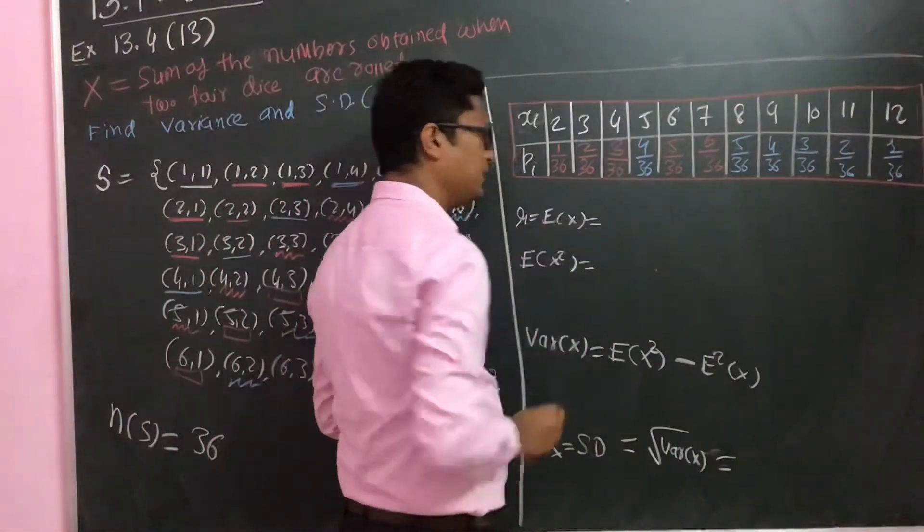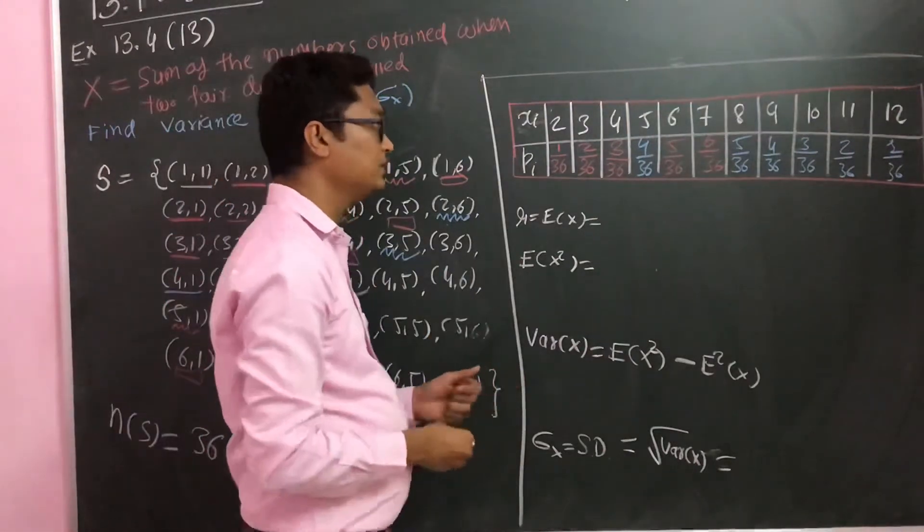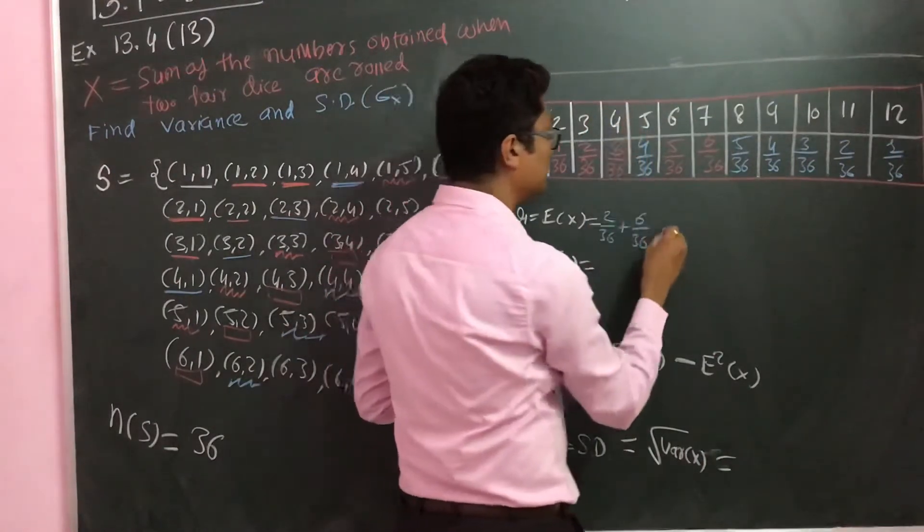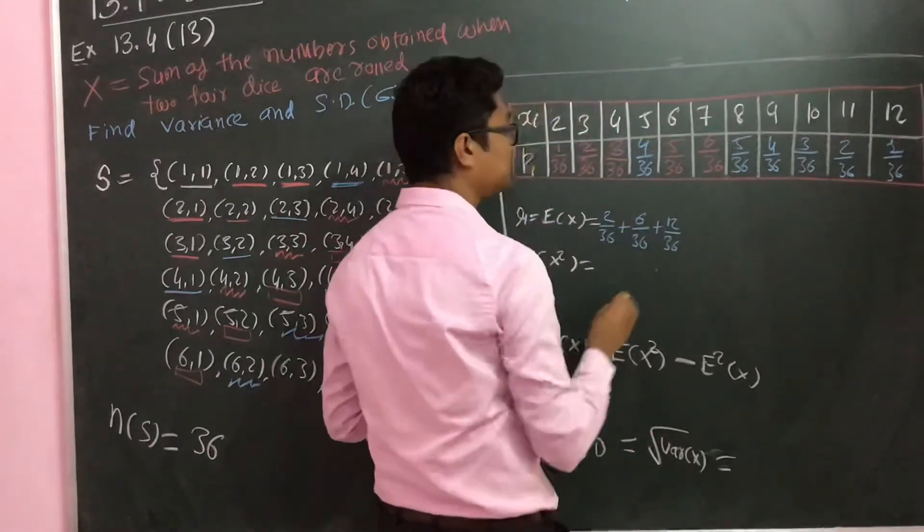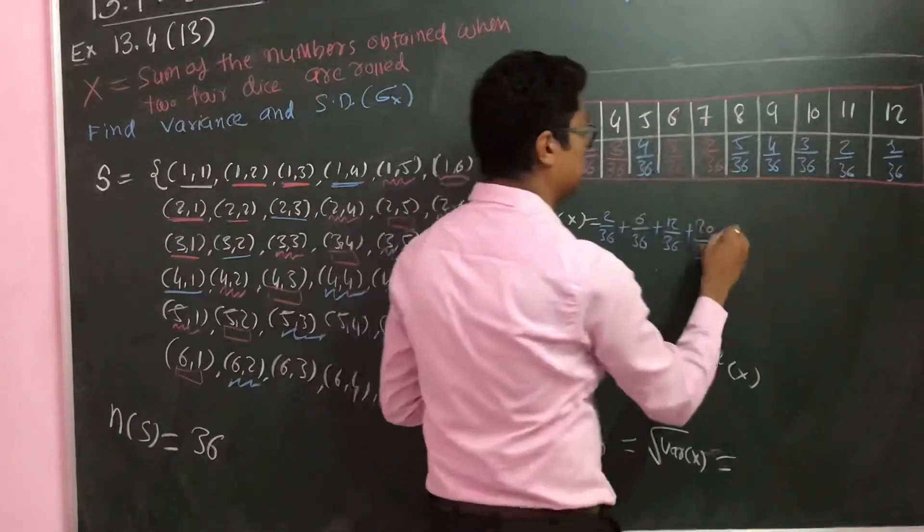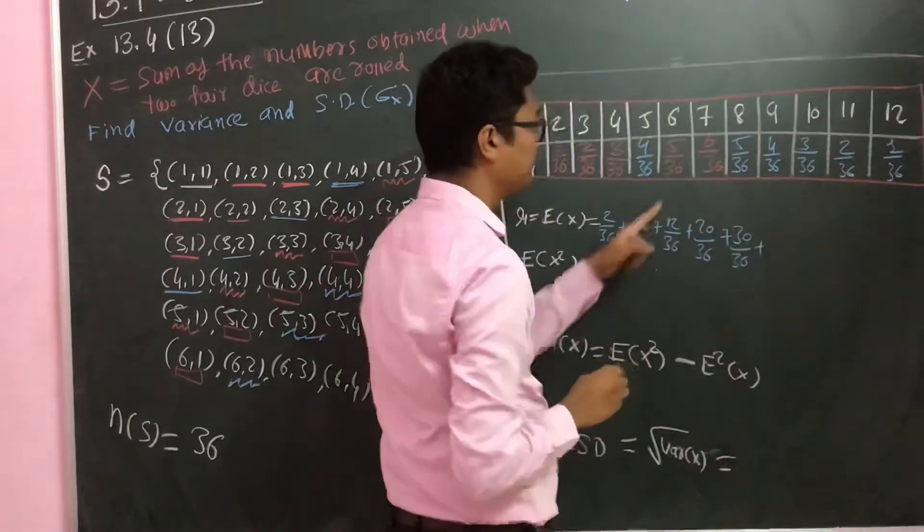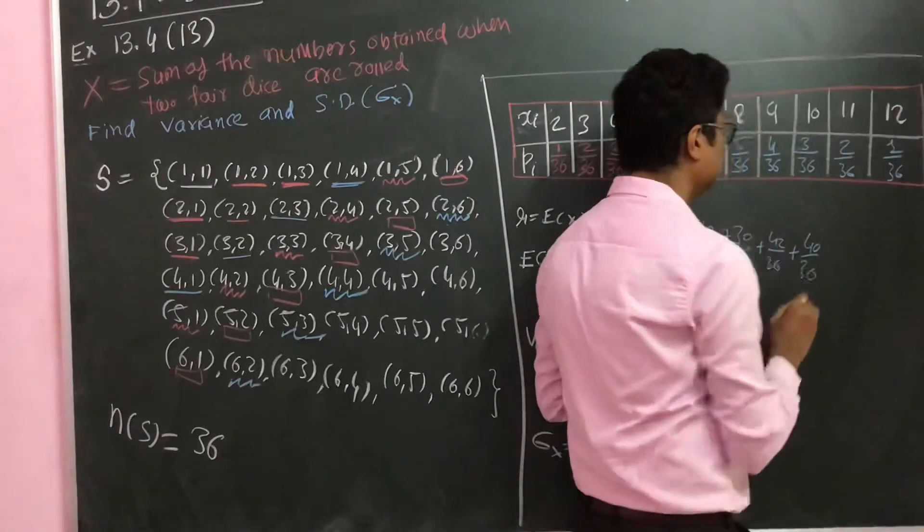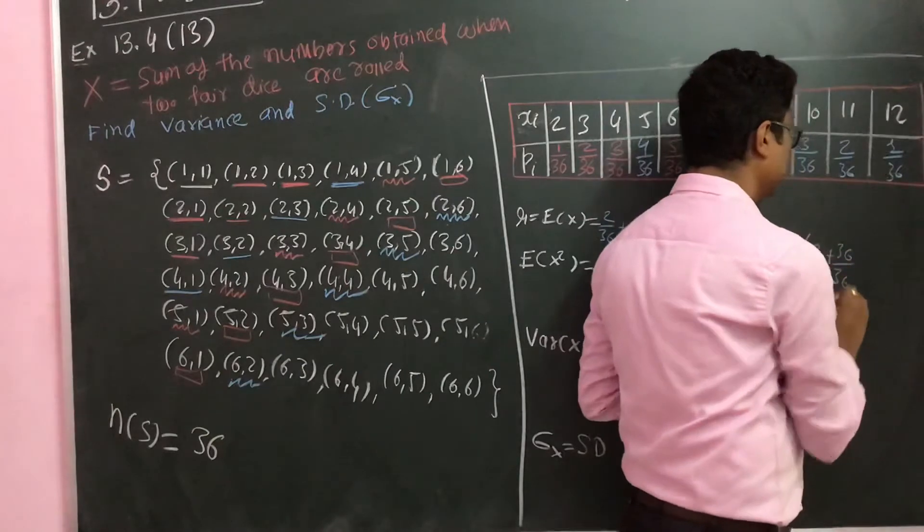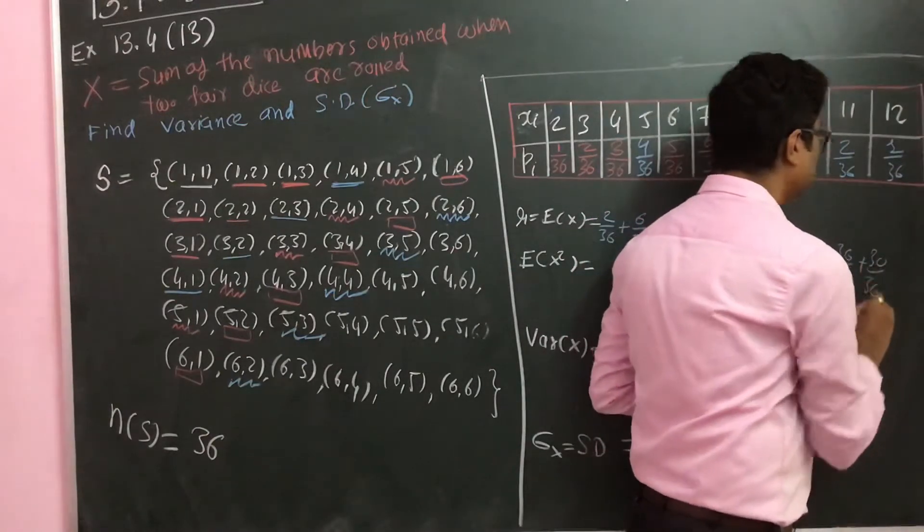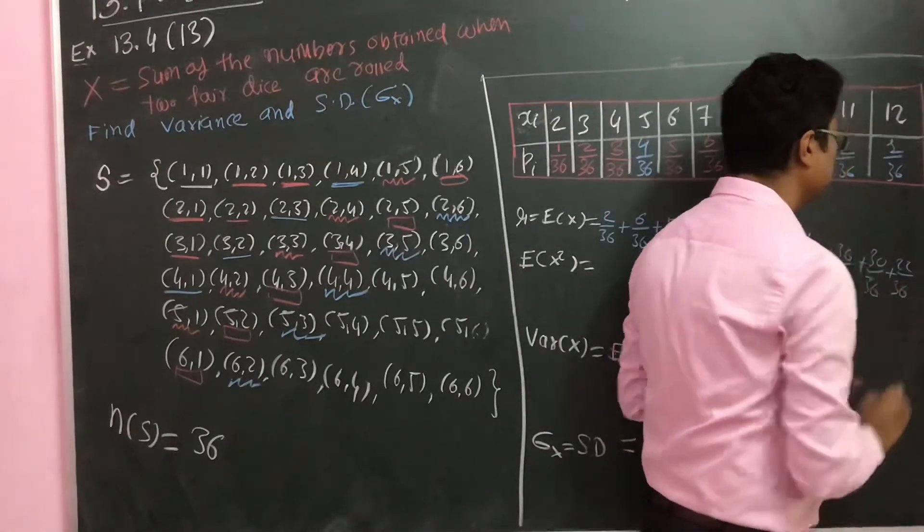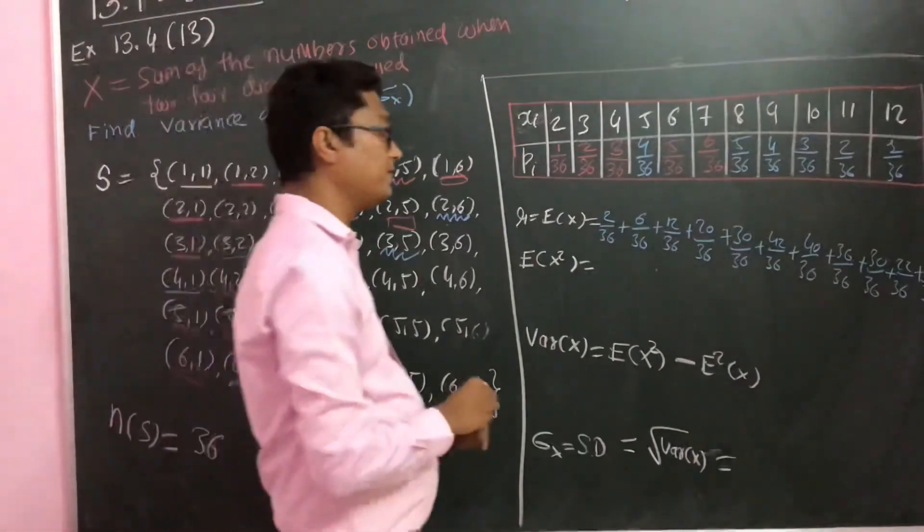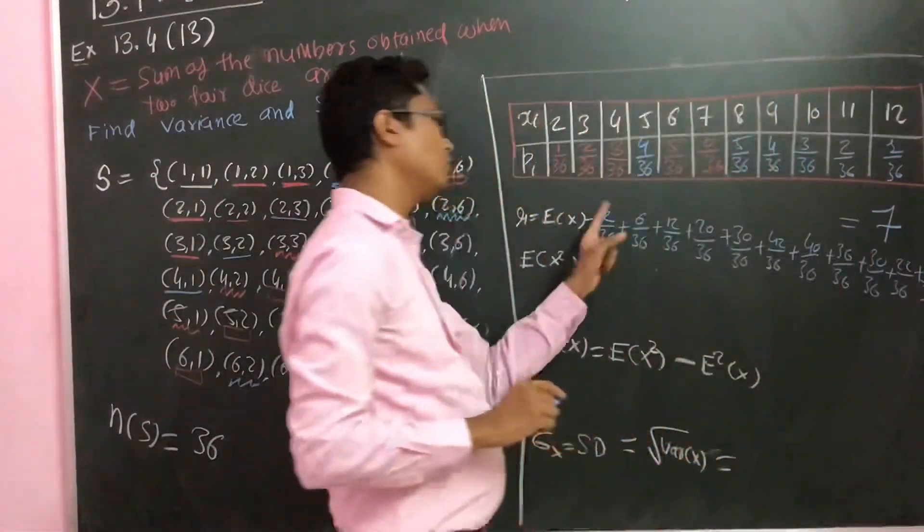Then after, it is easy. You have to find E of X. What you will do is multiply: 2 by 36 plus 6 by 36, 4 into 3 is 12 by 36 plus 20 by 36, 30 by 36 plus 42 by 36 plus 40 by 36. If you will add all these and simplify, then the answer you are going to get is 7.